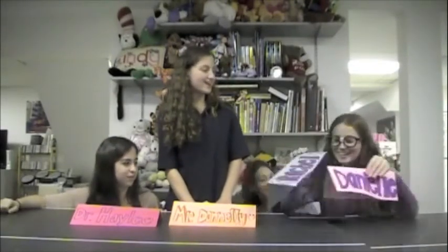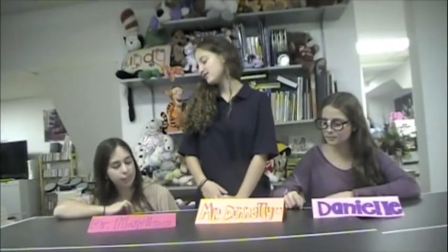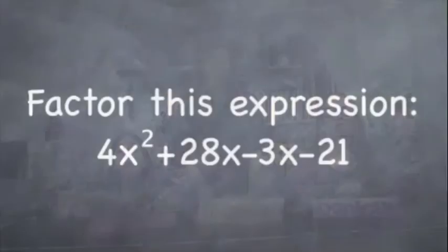Here comes Danielle! What do you want to choose next? Danielle, what are you best at? Grouping! Alright, grouping it is! The question for grouping, worth two points, is 4x squared plus 28x minus 3x minus 21.